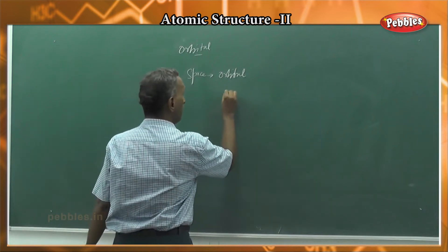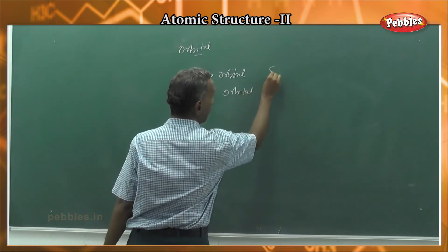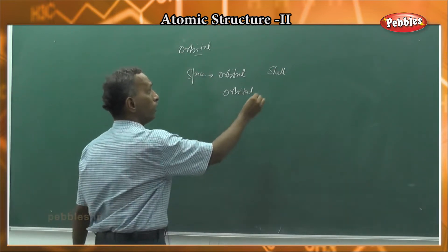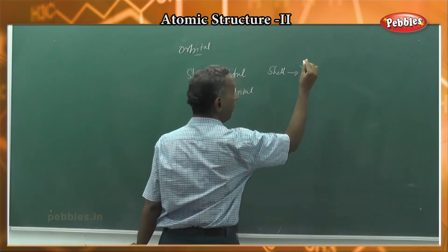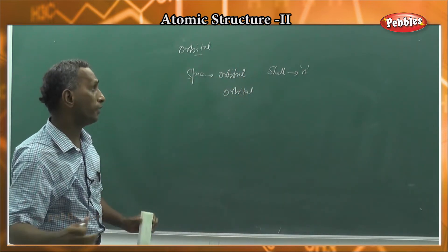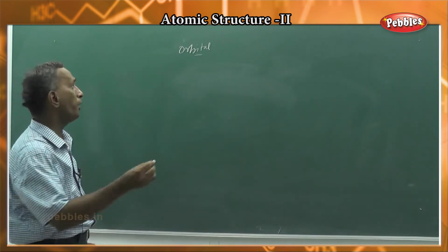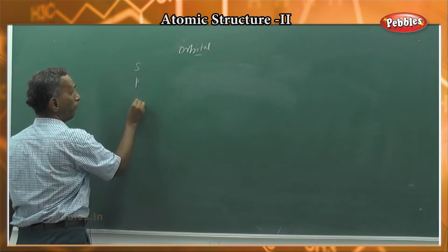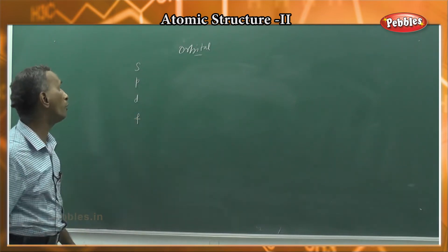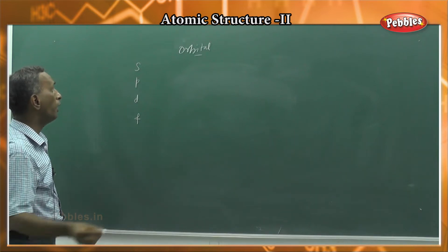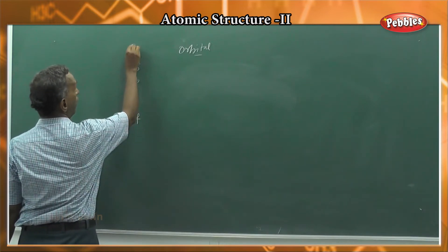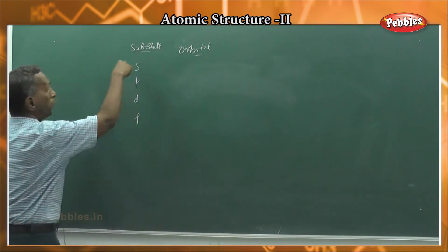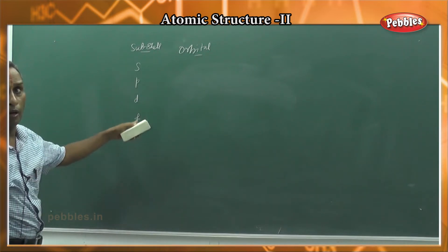The orbital is the subshell. Types of orbitals are important: S orbital, P orbital, D orbital, and F orbital. Sub-shells or orbitals are denoted as small letters — S orbital, P orbital — small letters.